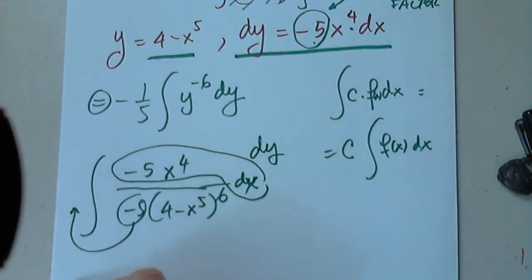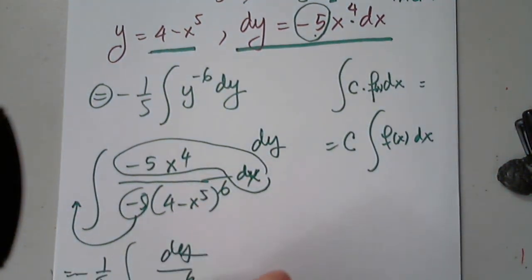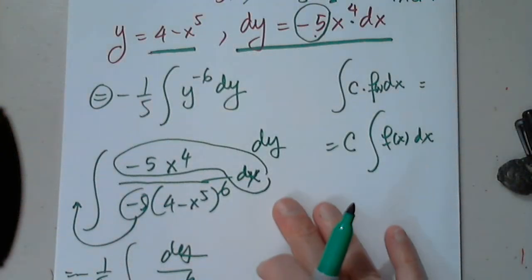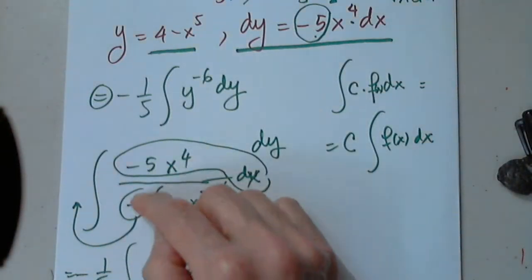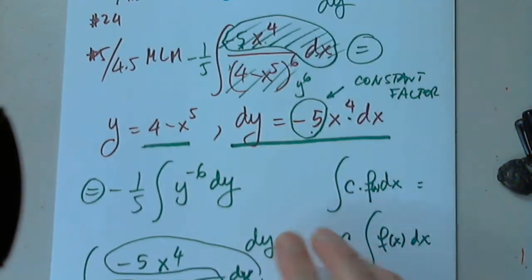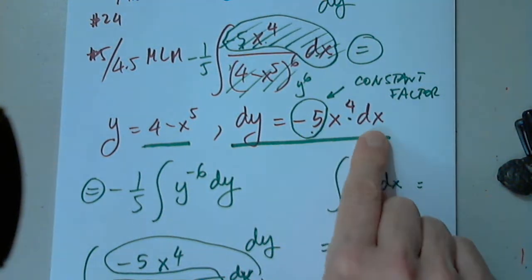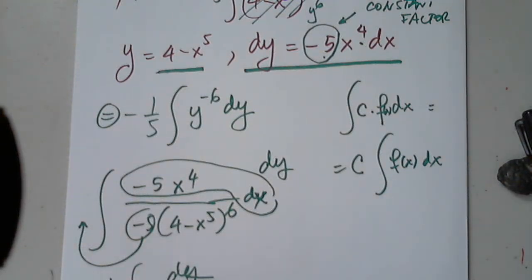Remember, the integral of a constant times a function dx — the constant times the integral of f of x dx — is one of the properties. So the negative one fifth will go outside eventually. This is incorporated in dy; the negative one fifth will go outside, and then you still have the integral of dy over y to the sixth. The negative five at the top with x to the fourth has to be incorporated in dy. The number in front in the denominator will have to go outside — it's a constant, a factor — so I can deal with this integral properly.